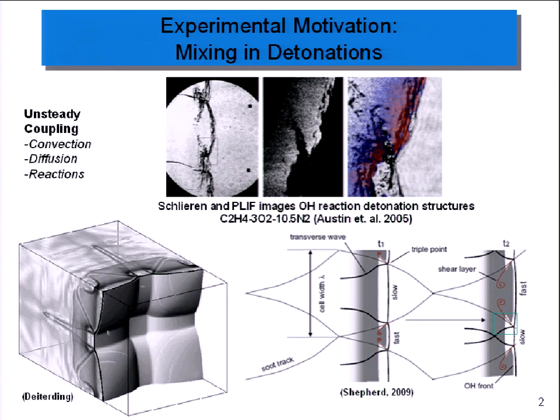In detonations, there are a lot of things going on: convection, diffusion, reactions. They're also three-dimensional. Shown here is a three-dimensional simulation, inviscid, and a diagram of what's going on. When you think about detonations, you think about shock reflections. Shown here are points where shocks reflect off each other. That's mainly the main structure of a detonation and what I simulate.